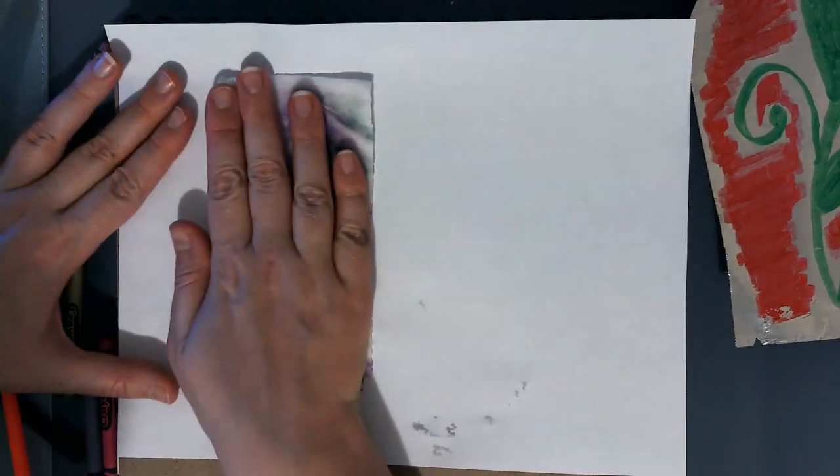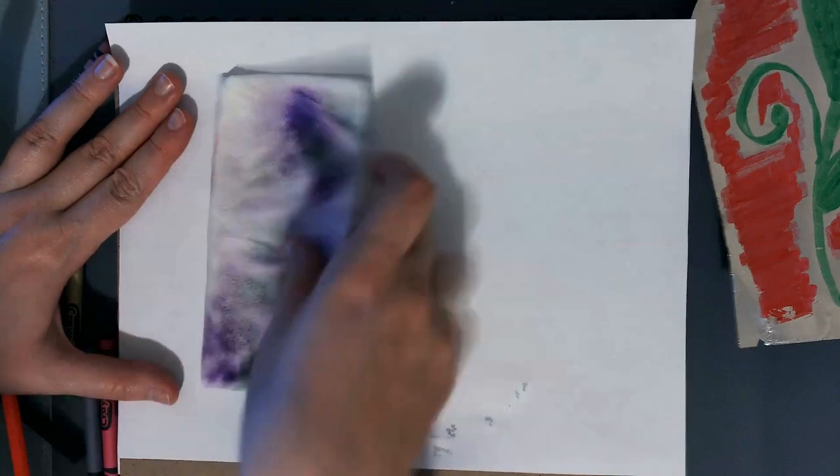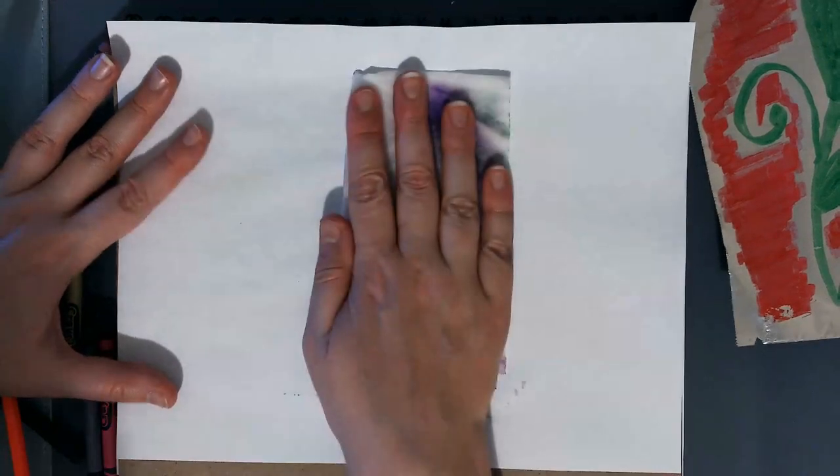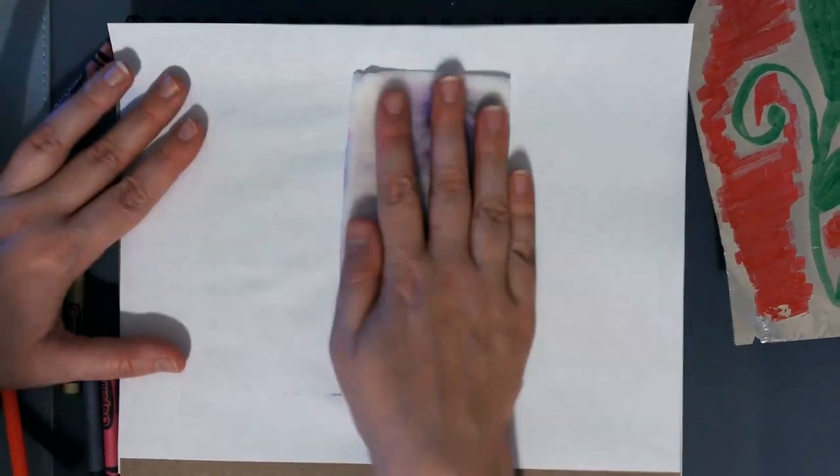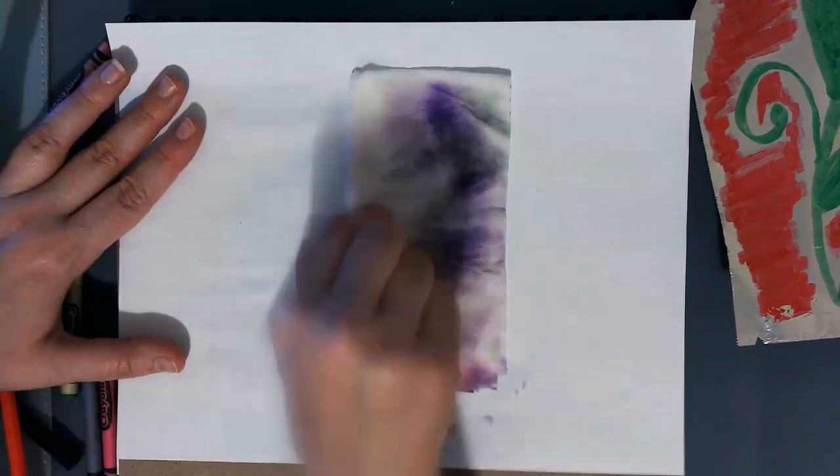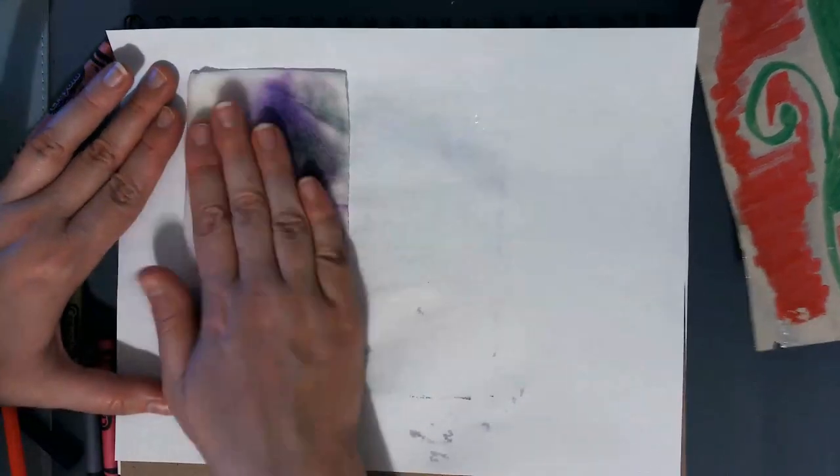I slowed this down to normal speed so you could see how much time I spend getting the paper pretty wet. This paper is a little bit on the thick side so it took a little bit extra time to get the paper nice and wet.